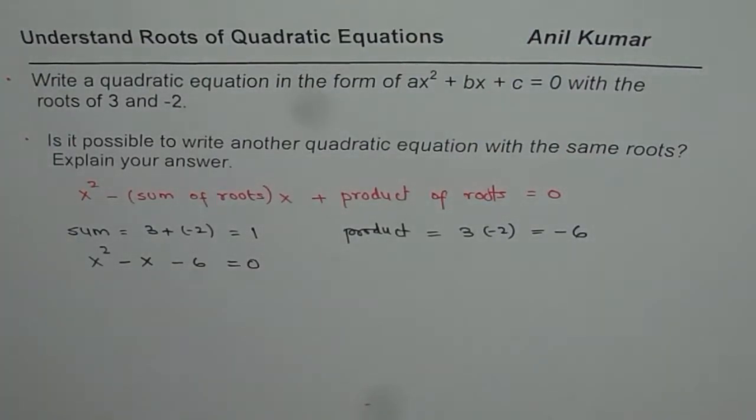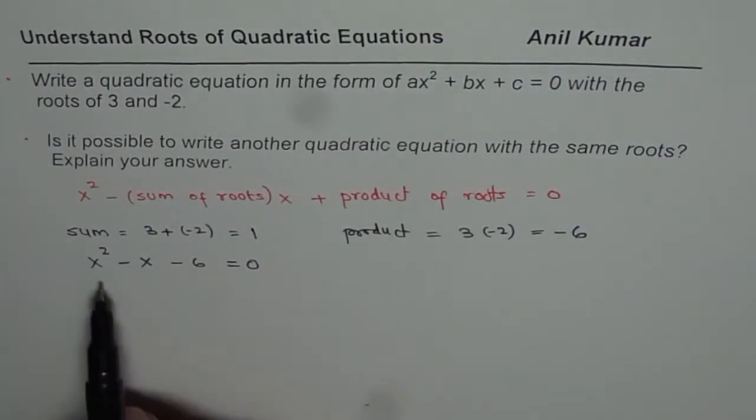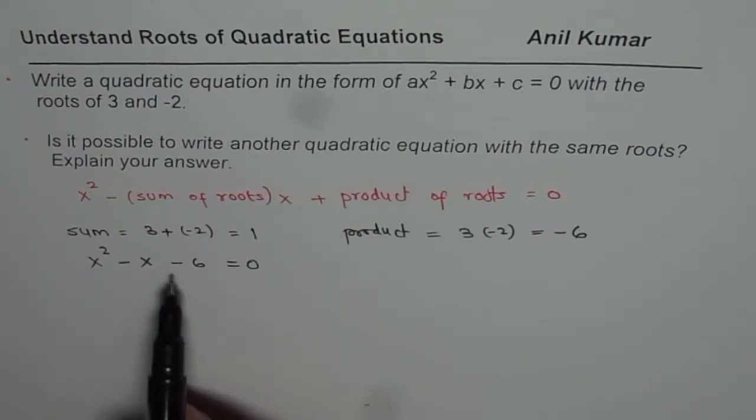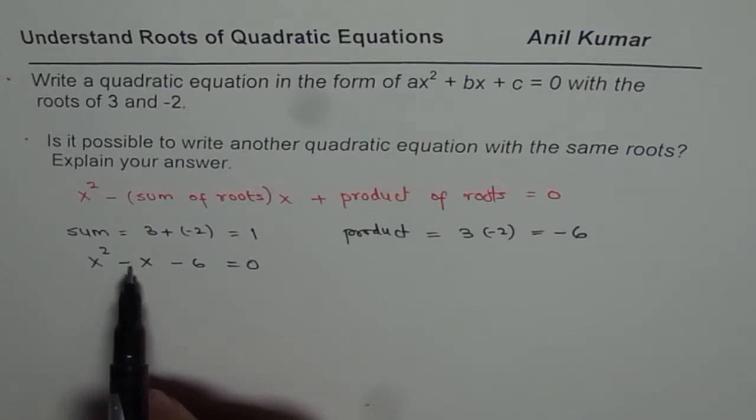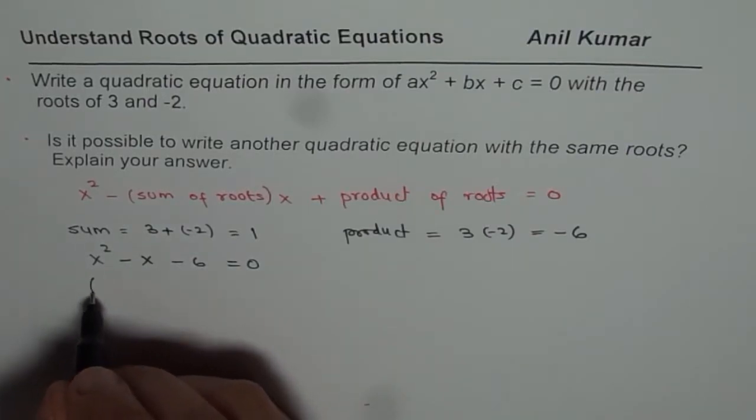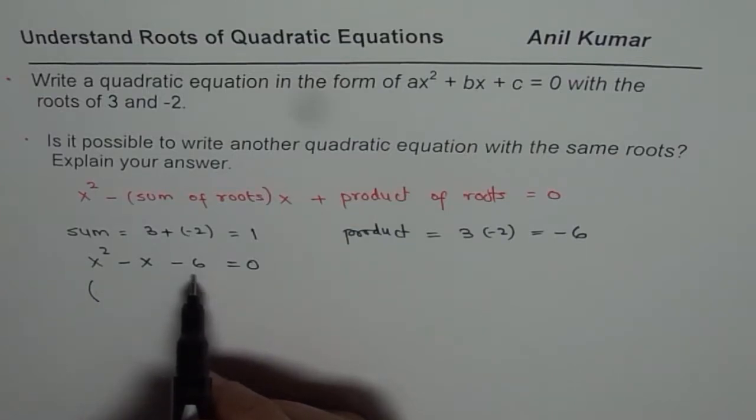So that becomes our solution. So that is the solution. You can check by factoring that it really works. We need to get product of -6 and sum of -1. So we could write this as 3 times -2.